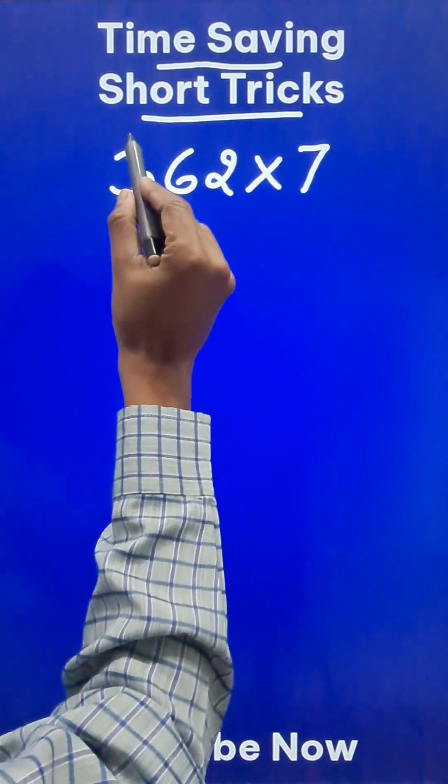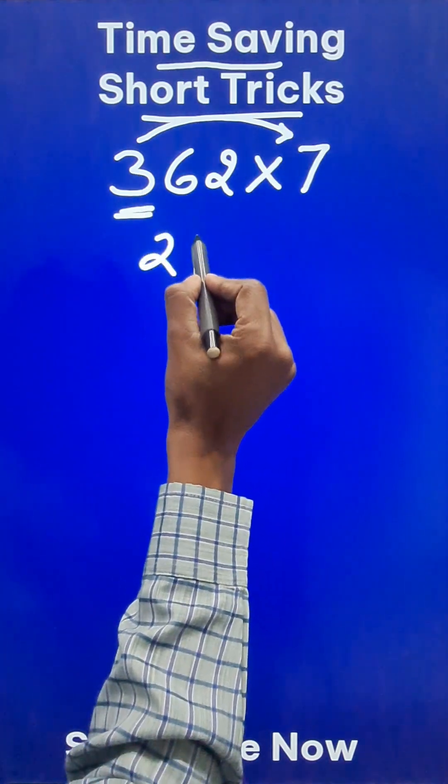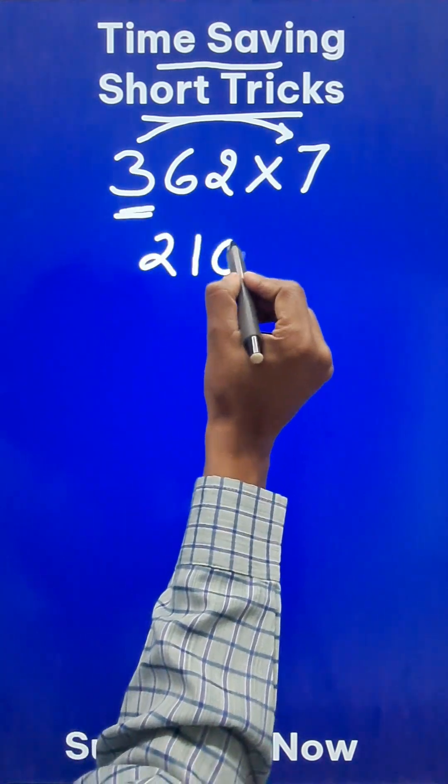3 is in the hundreds place, so when you multiply 3 by 7, you get 21, and because it is in the hundreds place, put 2 zeros.